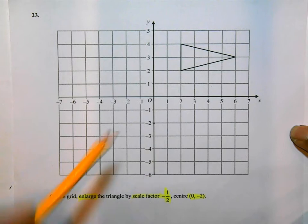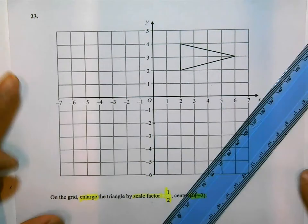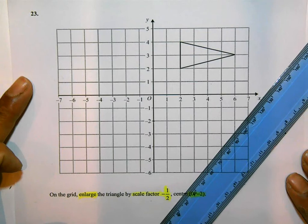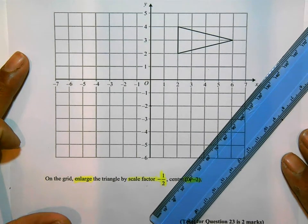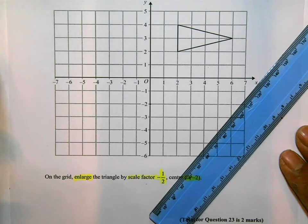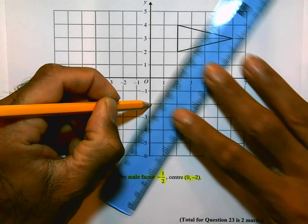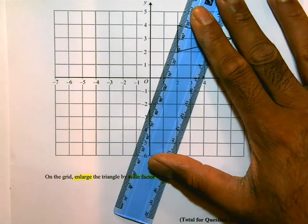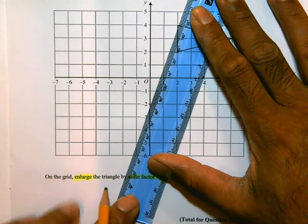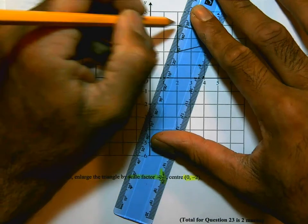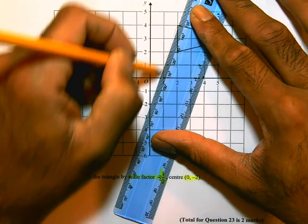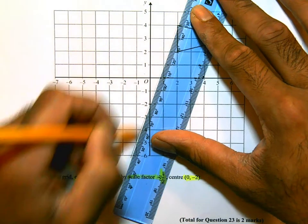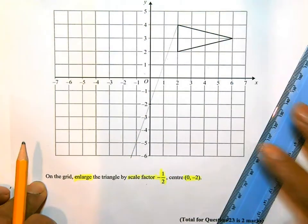So what I'm going to do, it's going to be on the other side of the center of enlargement. And I'm going to draw lines from every corner of the triangle. I'm going to go straight through the center of enlargement. It's really important that you actually do this accurately and bring the lines all the way through.